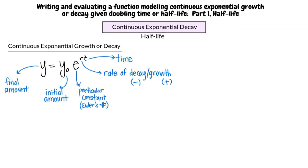In this formula, y is the final amount, y-naught is the initial amount, e is a constant which is also called Euler's number, r is the relative rate of decay or growth, and t is the time. The sign of the rate r is how we differentiate between continuous exponential growth and decay. A positive r will mean continuous exponential growth, and a negative r will mean continuous exponential decay.